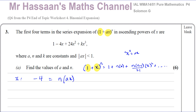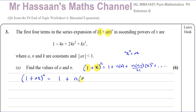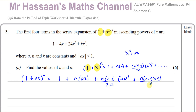Let me write out the expansion for (1 + ax)^n according to this pattern: 1 + n·(ax) + n(n−1)/2! · (ax)² + n(n−1)(n−2)/3! · (ax)³.